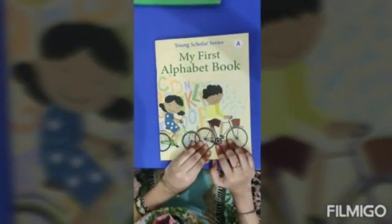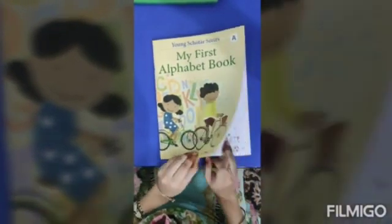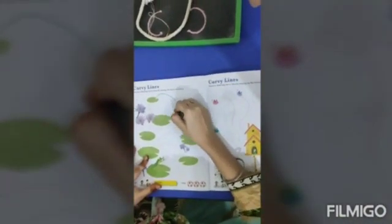Now dear children, open your My First Alphabet book to page number 46 and complete both the pages. These lines are called curvy lines. You have to join the dots like these.